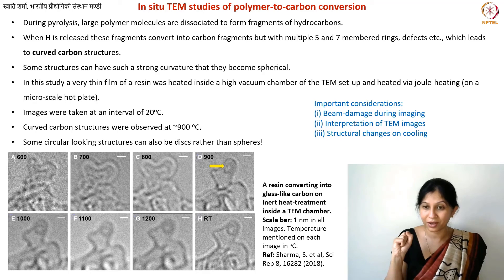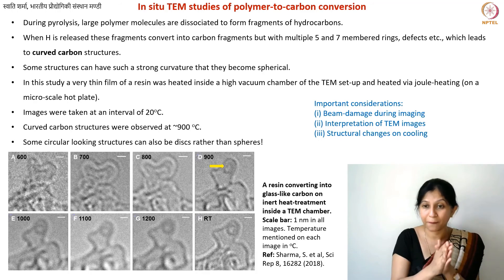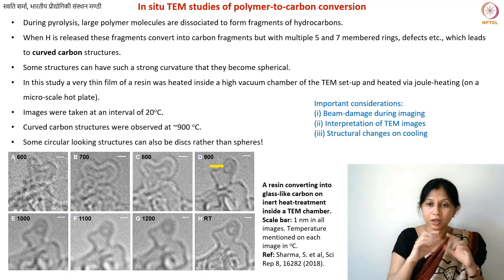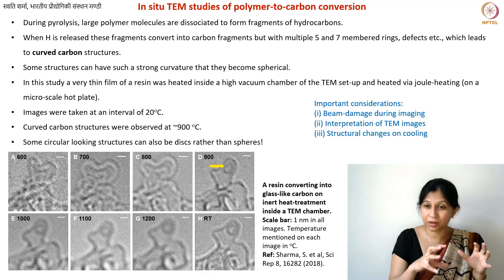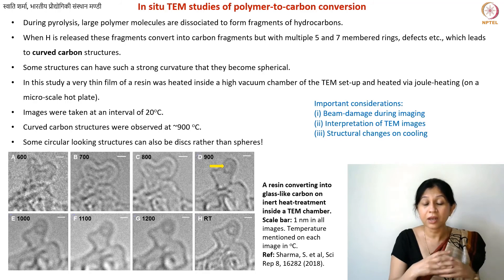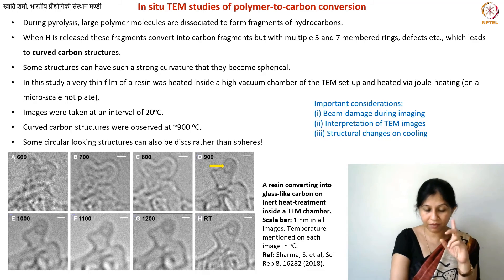This was done on a Joule-heated plate — essentially a microfabricated hot plate with very controllable heating rate and dwell time at each temperature. We used the lowest possible beam voltage that would still give a reasonable image, considering all these factors to minimize damage. However, you can still not say this is perfect — some damage is always possible. Also, interpretation of TEM images involves many factors that we will learn more about in our TEM-related lectures.